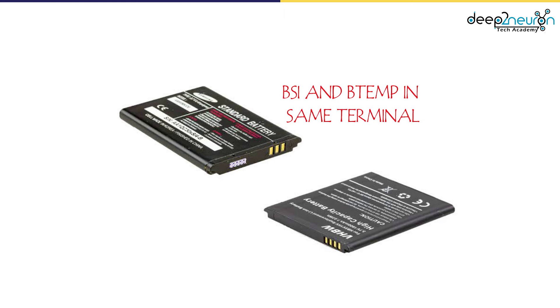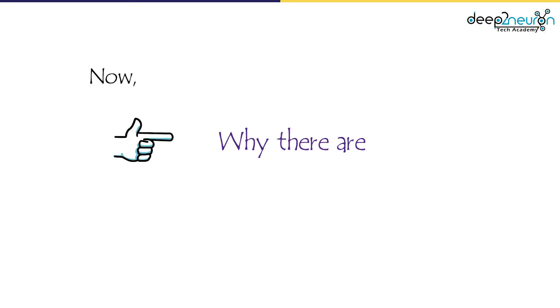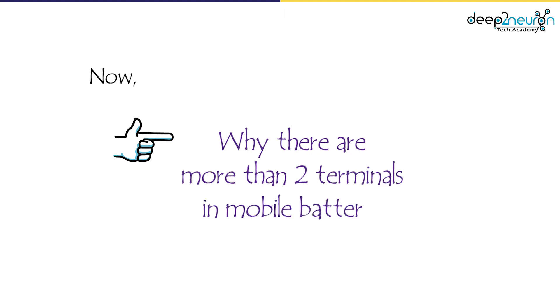In mobile phones with three terminals, both BSI and B-TEMP functions are used on the same terminal. In some other smartphones, we can see four terminals, where BSI and B-TEMP are used on separate terminals. Now you would clearly understand why there are more than two terminals in a mobile phone battery.